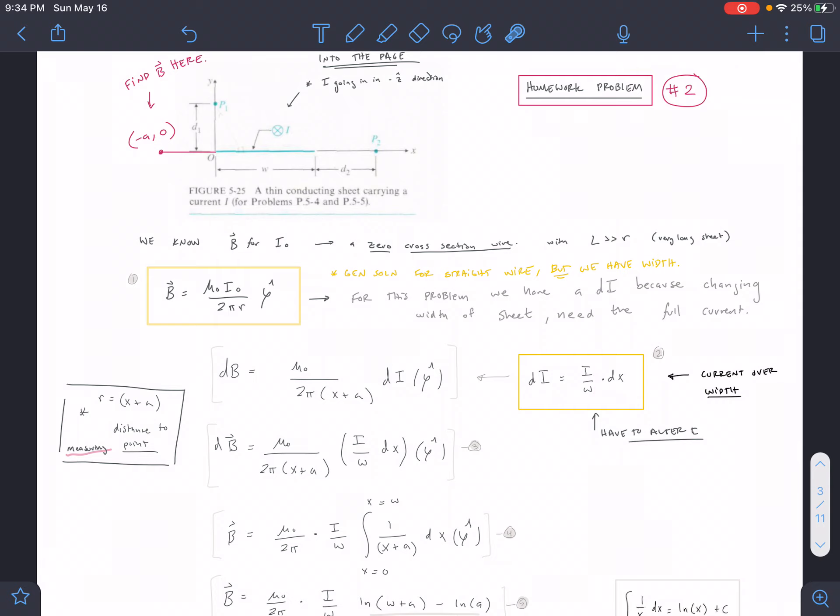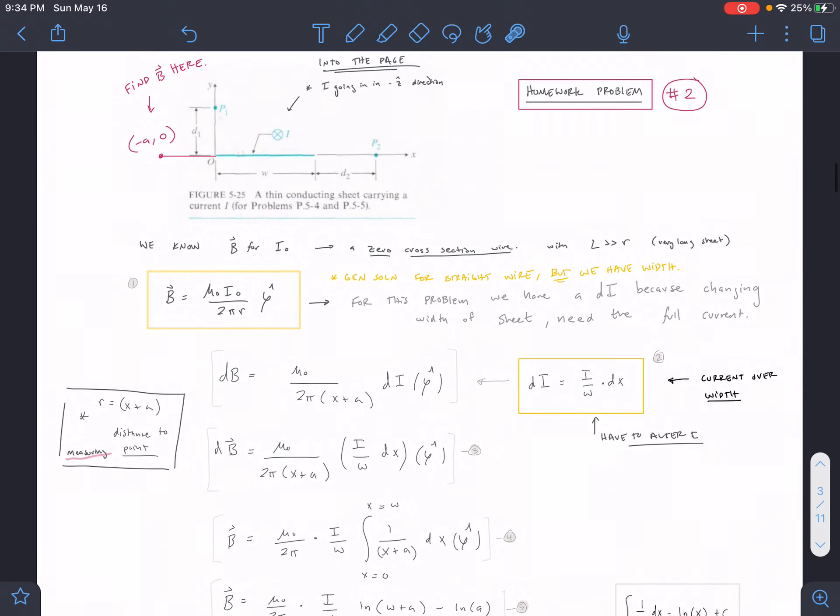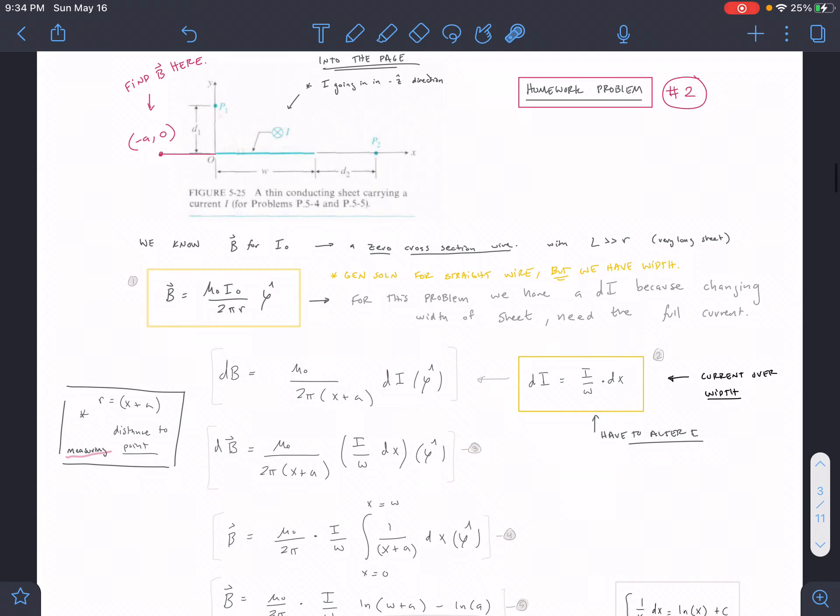Then it's multiplied by our dx. Our dx is going from zero to w and so it will get larger and larger as we're going through part of that sheet. It's a little weird, I know. Next we need to find our r value here.